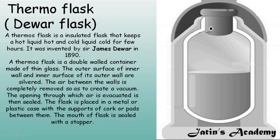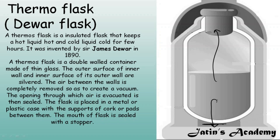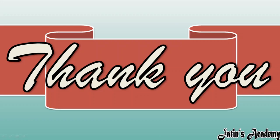If heat tries to escape by radiation, the silver polish reflects it back. The opening of the flask is also sealed properly to prevent heat from escaping that way. The glass flask is contained in a metal or plastic outer case and is supported by pads so heat cannot conduct through them. With no conduction, convection, or radiation pathways available, the hot or cold contents remain at their temperature for several hours.